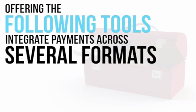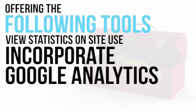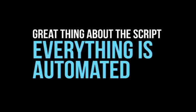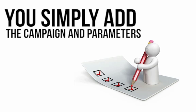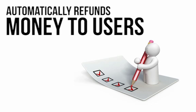Automate the sharing of information by automatically sending newsletters and generating unique coupon codes. Integrate payments across several formats including PayPal. View statistics on site use, incorporate Google Analytics, and get a clearer picture of who your site users are. Everything is automated — you simply add the campaign and parameters and everything is taken care of for you. It even automatically refunds money to users if the minimum number of buyers is not met to activate the deal. Plus, you'll get a whole year of free support and updates included.